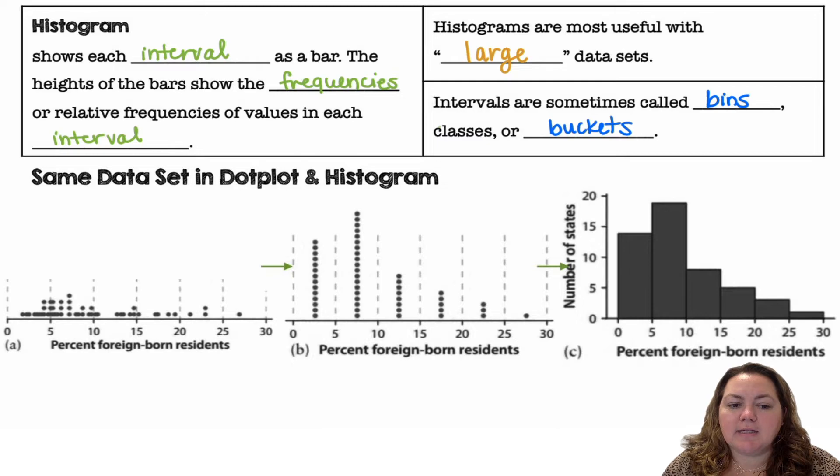This is the same data set as a dot plot and then as a histogram. We have our dot plot in picture A and then those dotted lines are putting them into bins or buckets. All the dots that fall in from 0 to 5 make up that first bucket. And then we draw a bar for all of them in that bucket, the frequency of that entire bucket to make our histogram.